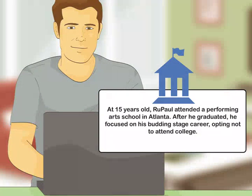Include the person's schooling. Include details on the person's education, such as where they went to grade school or high school. Mention any details about their schooling that reflect on their career or achievements later in life. For example, you may write: At 15 years old, RuPaul attended a performing arts school in Atlanta. After he graduated, he focused on his budding stage career, opting not to attend college.